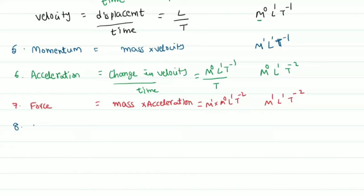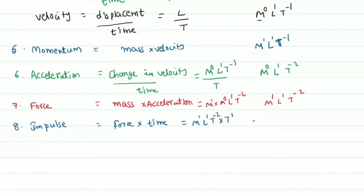Next is impulse. Impulse is the product of force and time. Force has dimensions M power 1, L power 1, T power minus 2. Multiplying by time T power 1, the T powers add: minus 2 plus 1 equals minus 1. So impulse has dimensions M power 1, L power 1, T power minus 1.